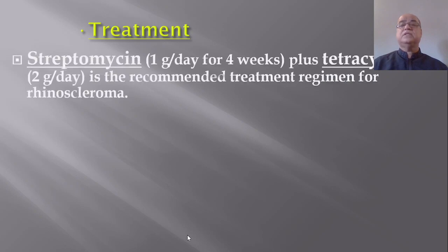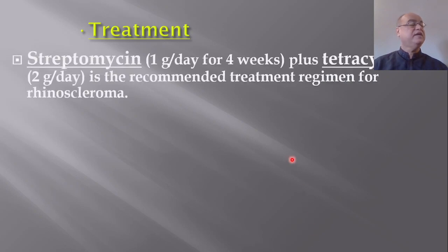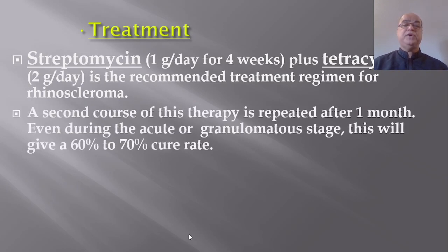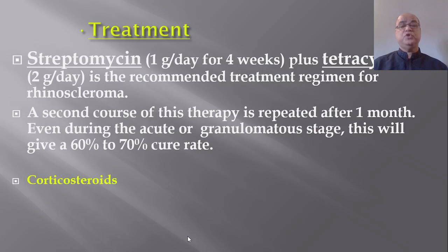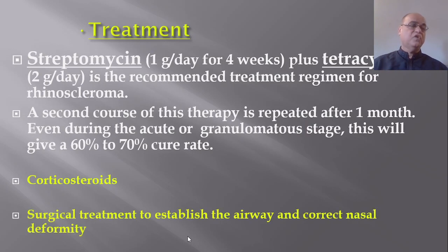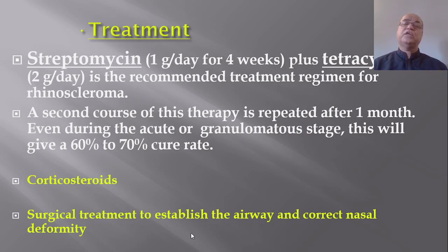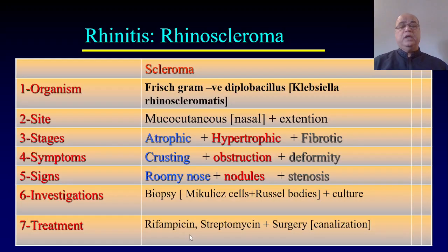Once diagnosis is confirmed, treatment begins. The bacteria are sensitive to streptomycin and tetracycline, which is the recommended treatment regimen for rhinoscleroma. A second course of therapy is repeated after one month, giving a 60 to 70 percent cure rate even in the acute or granulomatous stage. Corticosteroids can also be used. Surgical treatment aims to remove devitalized or necrosed tissue, establish the airway, and correct nasal deformity once the underlying disease is under control.